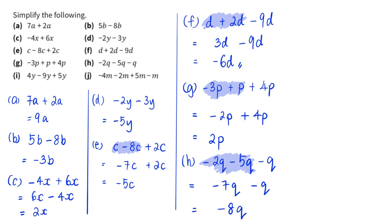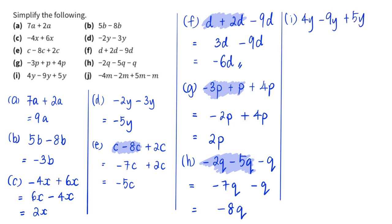Moving on to the last part, part i: 4y minus 9y plus 5y. 4y minus 9y gives negative 5y, then negative 5y plus 5y gives 0y. And 0y is actually equal to 0 — we just write 0.